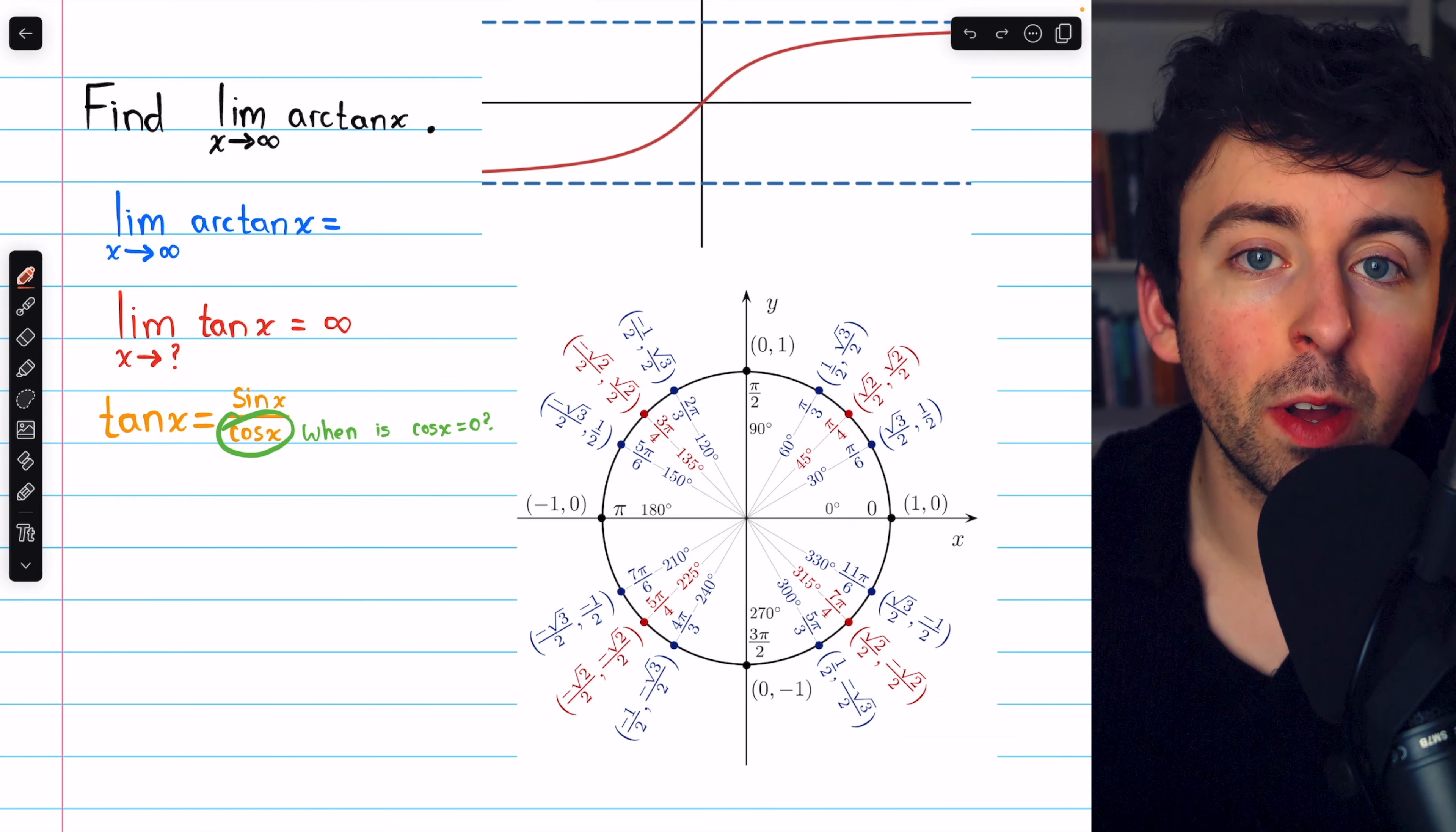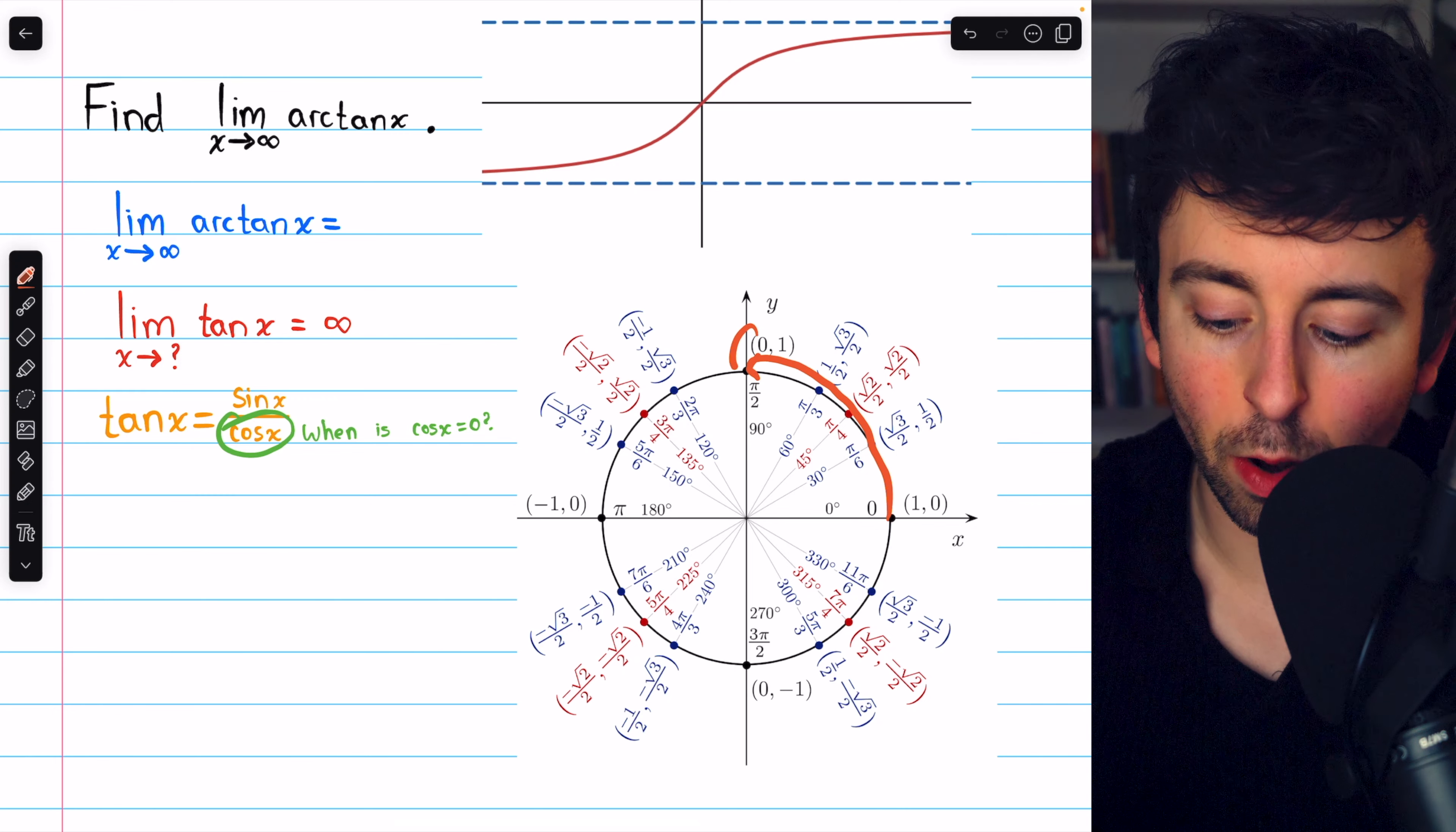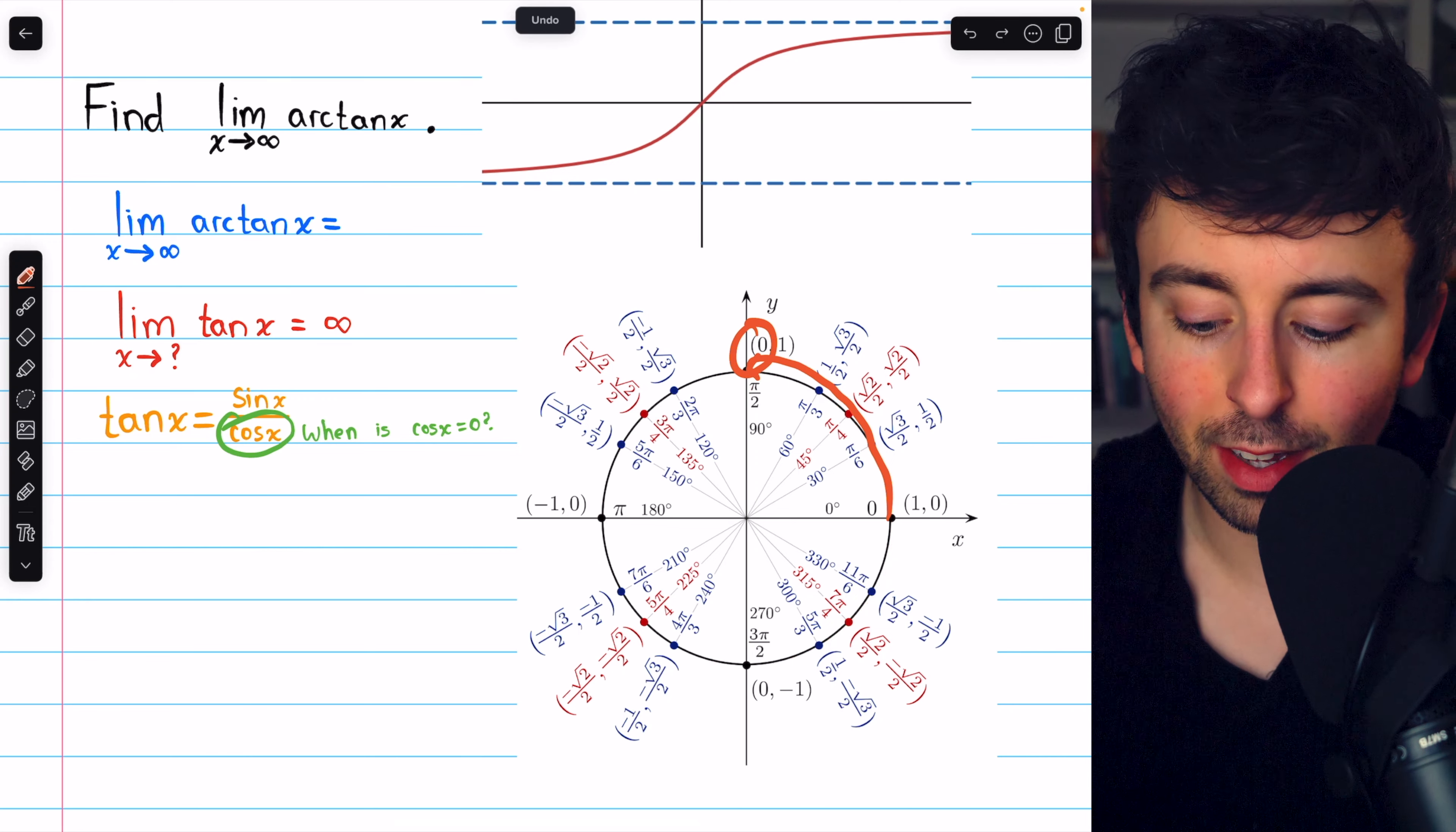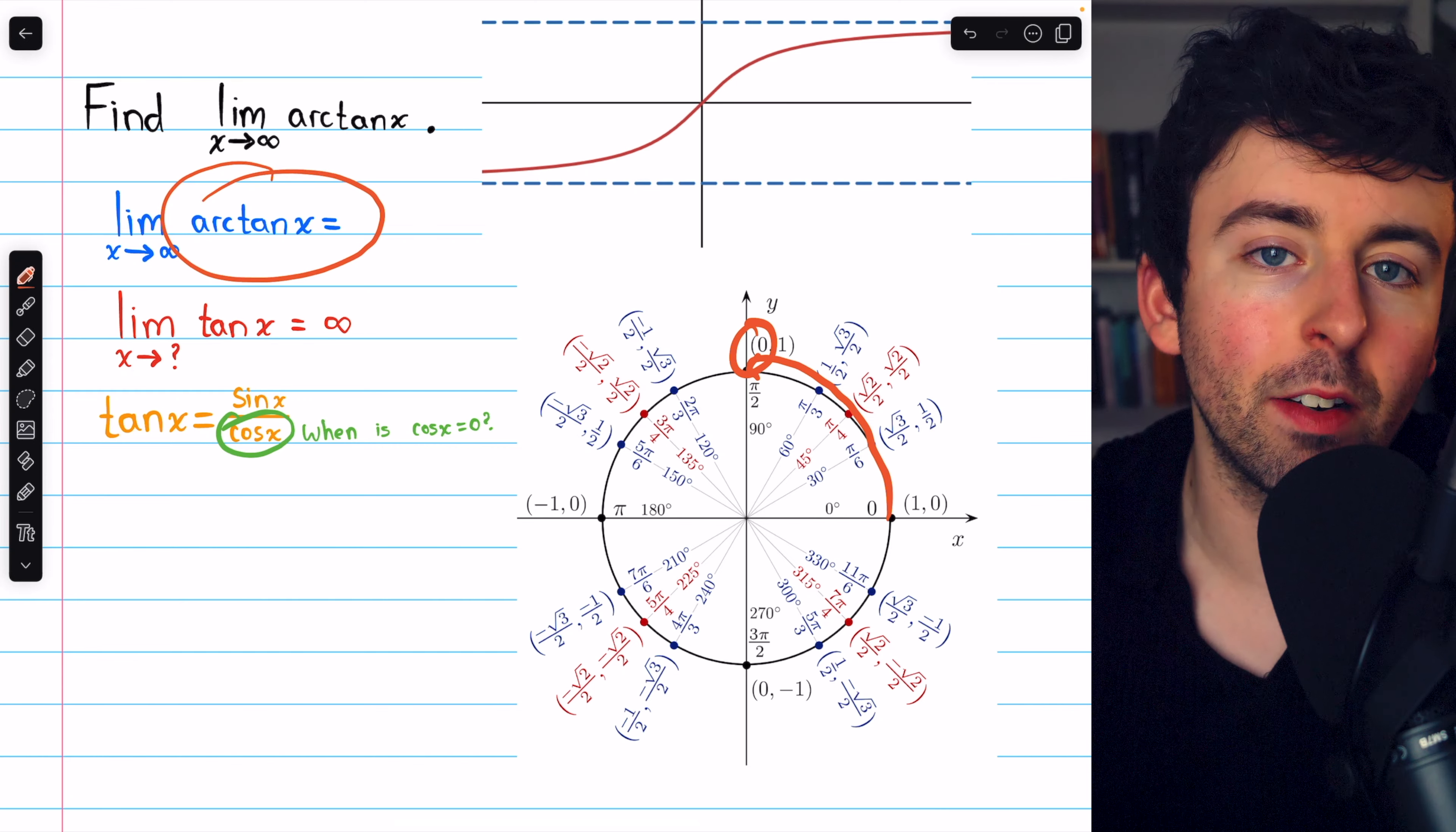Well, hopefully you know, but if not, here's your unit circle, and we see that cosine is zero at pi over two, a quarter rotation. It's also zero at infinitely many other places, but it's pi over two, which is in the range of the arctan function.